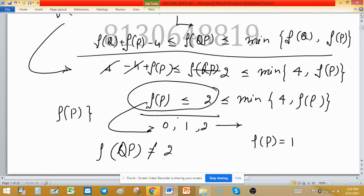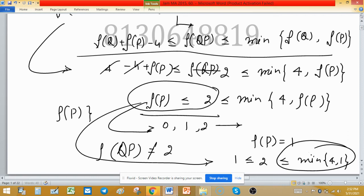If we are considering rank of P is 1, then from this equation we have 1 is less than 2, less than or equal to min of 4 comma 1. So here this last inequality will not hold, so rank of P may not be 1.